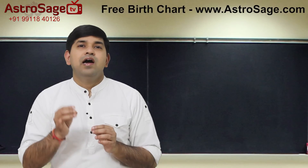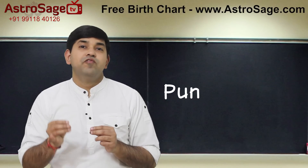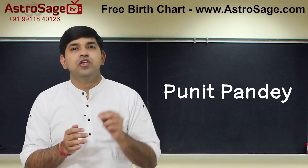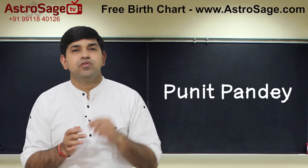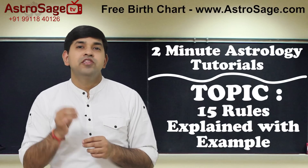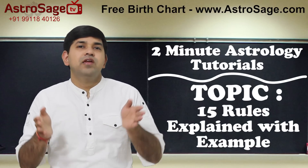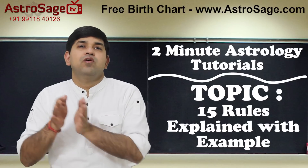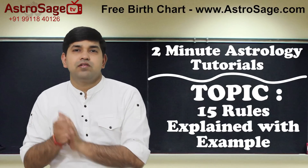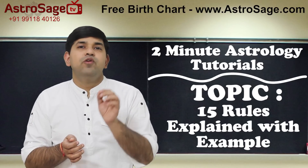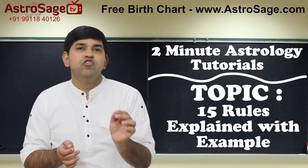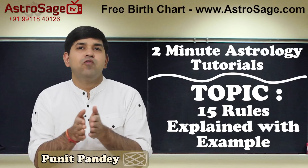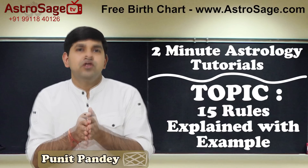Namaste. I had discussed 15 important rules in my previous episode. These rules tell us whether a planet will give us good results or bad results, and to get a conclusive view for a planet we need to combine the outcome of all these rules.